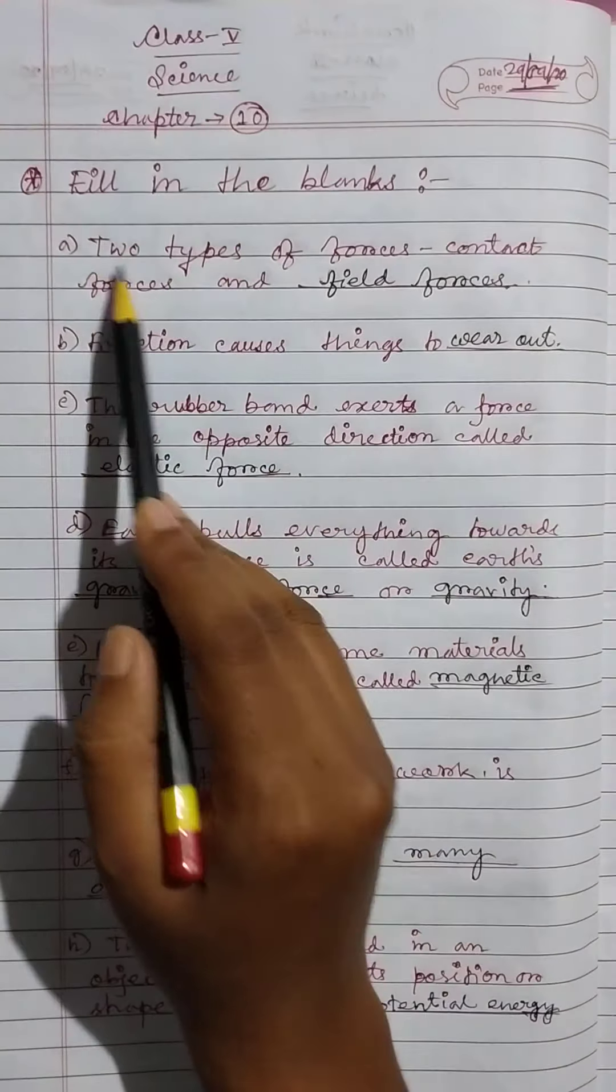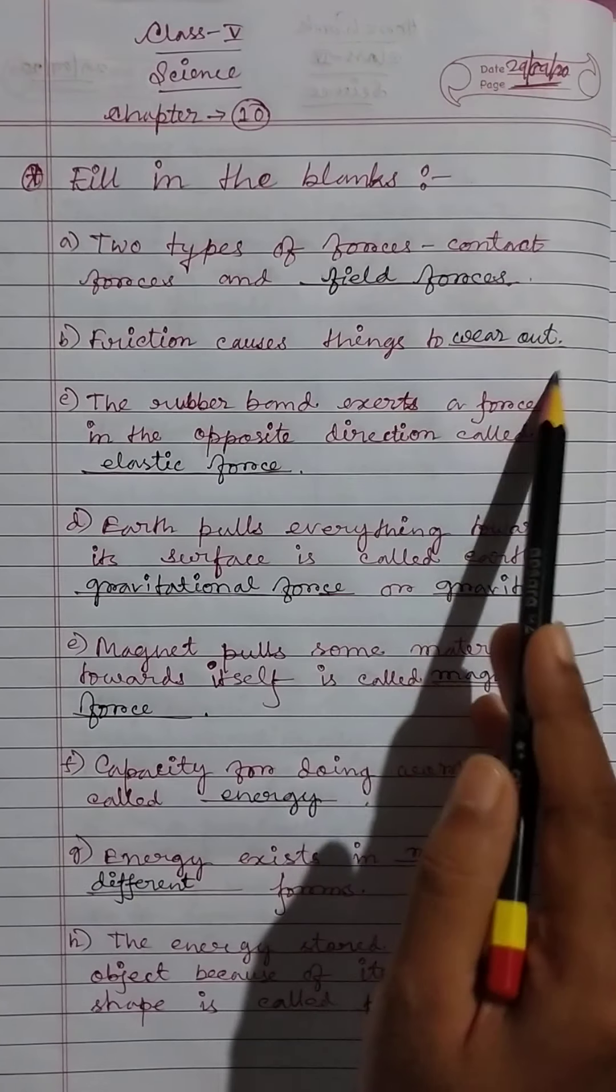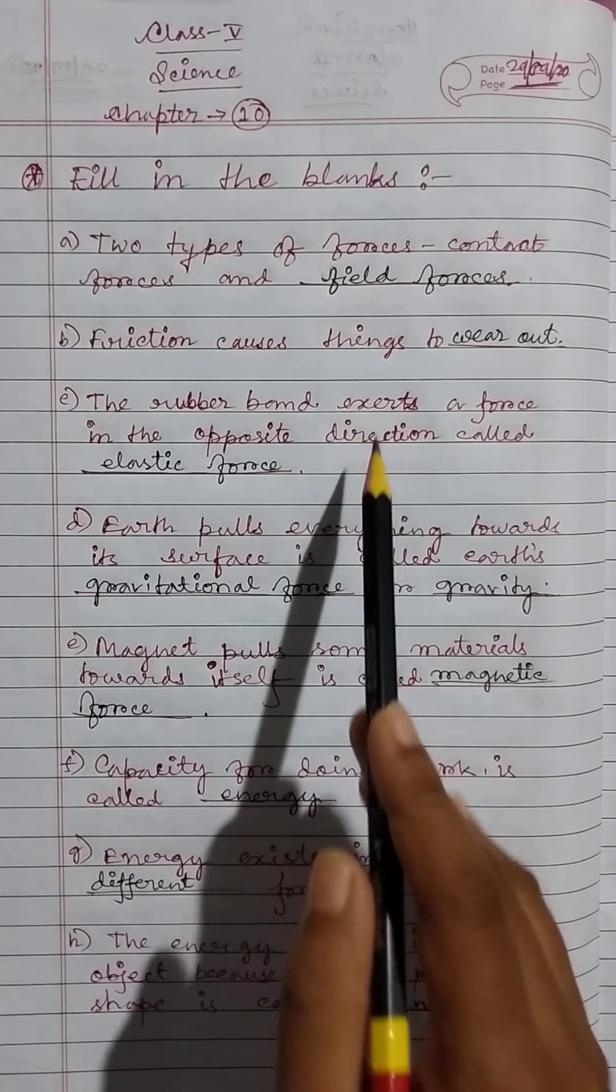Fill in the blanks. Two types of forces: contact forces and field forces. Friction causes things to wear out. The rubber band exerts a force in the opposite direction called elastic force.